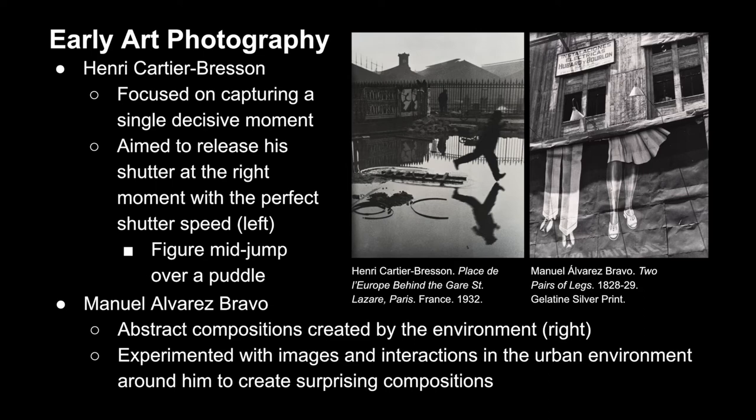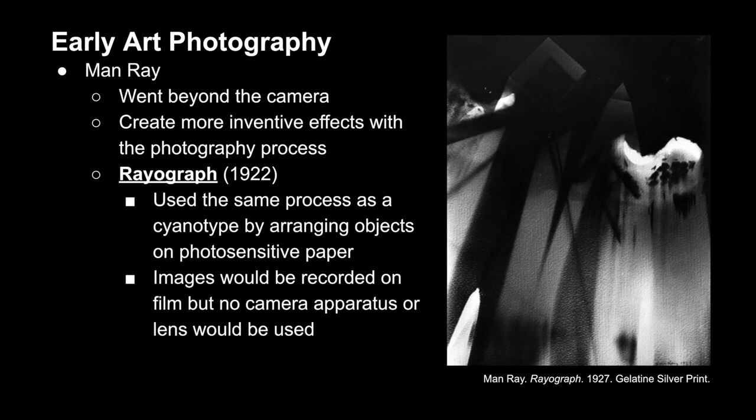Man Ray also created works of art using photography, but without a camera. In 1922, he created the Rayograph, which utilized a very similar process to the cyanotype, wherein artists would arrange objects on photosensitive paper before exposing it. Man Ray, who was contemporary to artists like Duchamp, was fascinated with found objects, and this was how he chose to utilize them within the medium of photography.